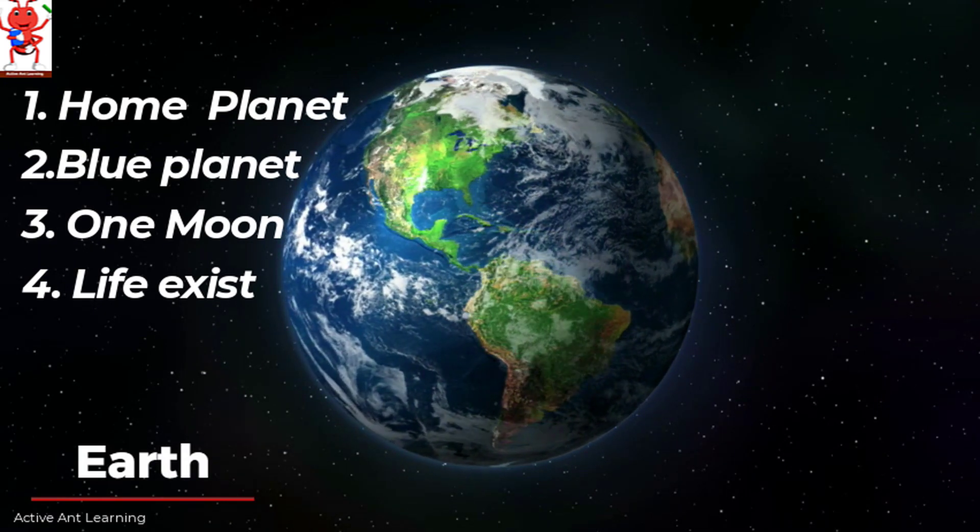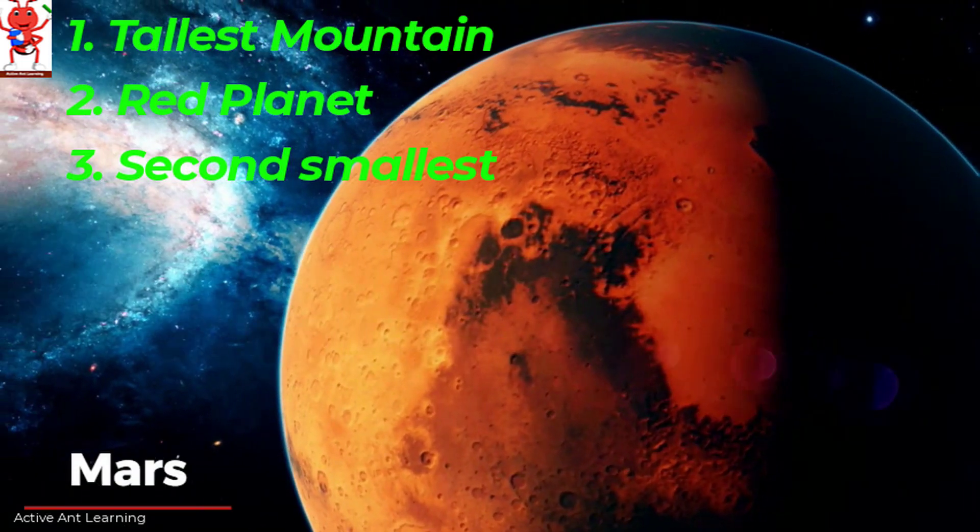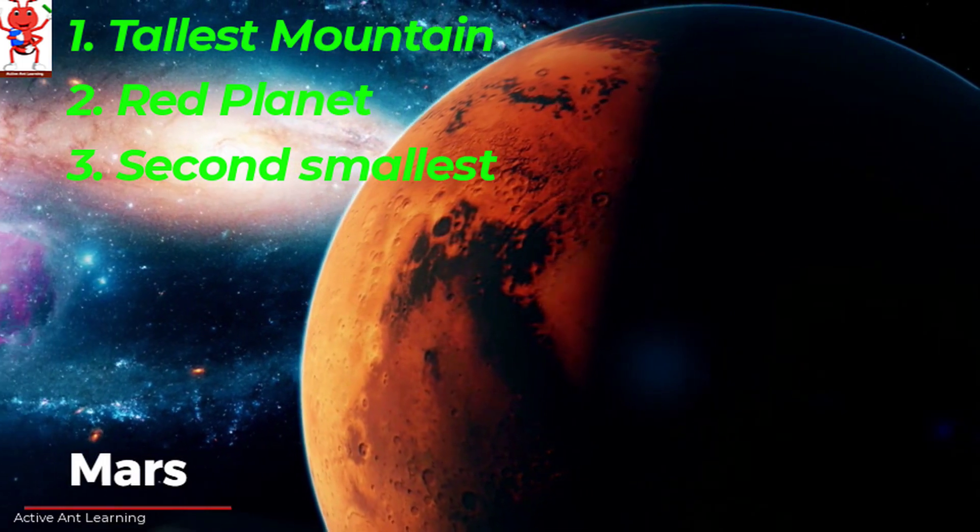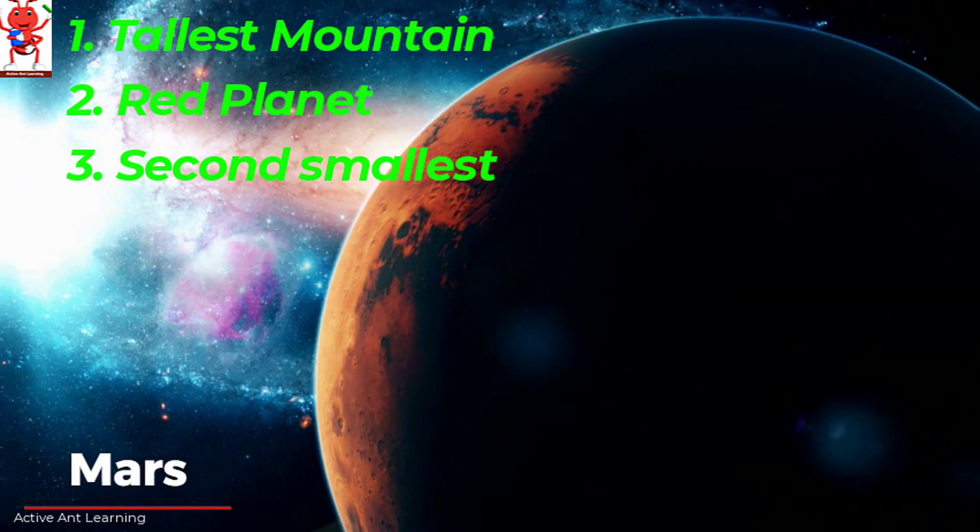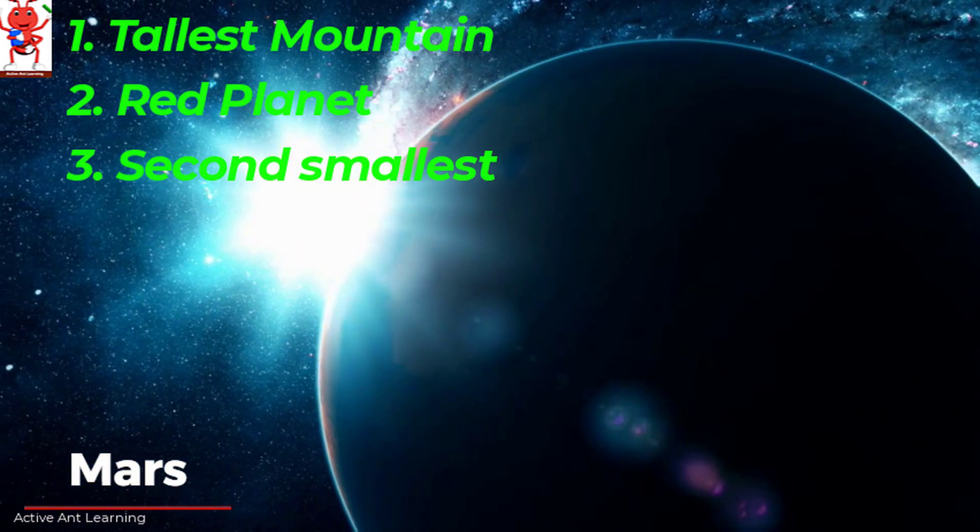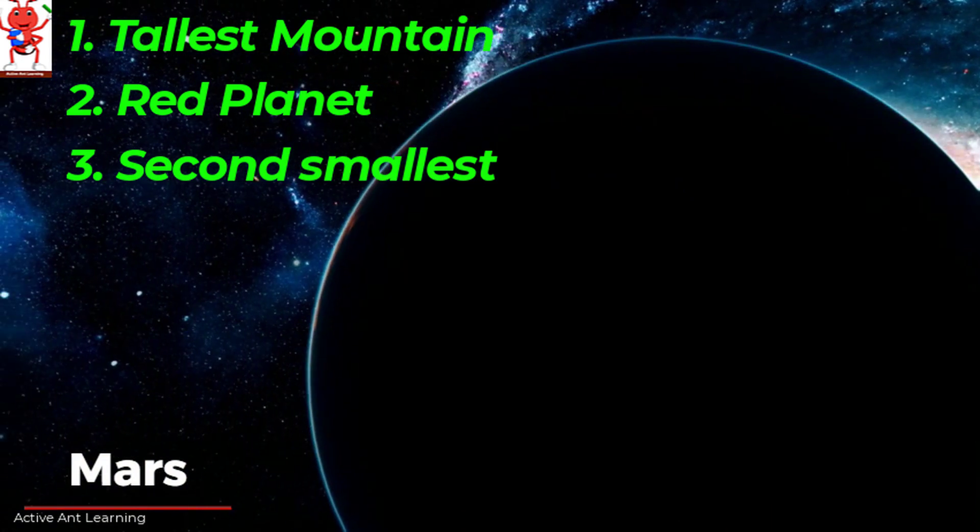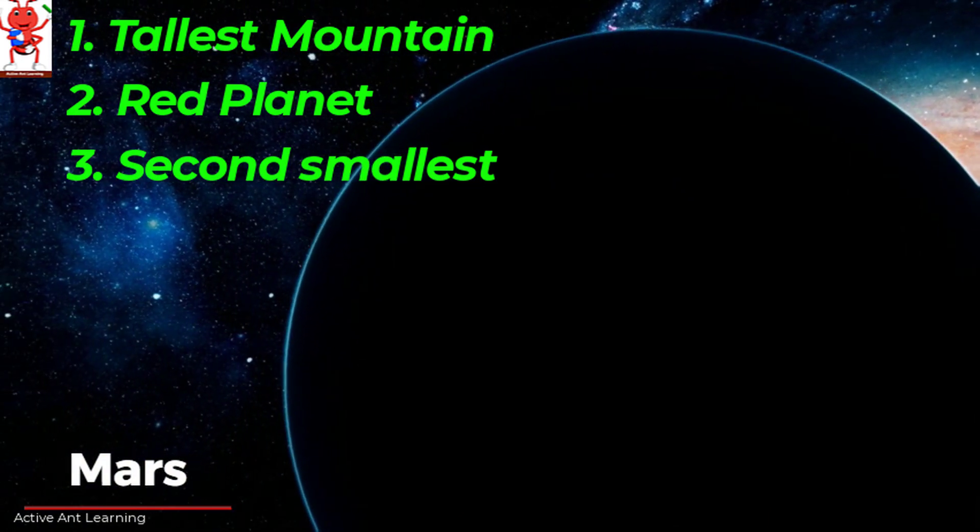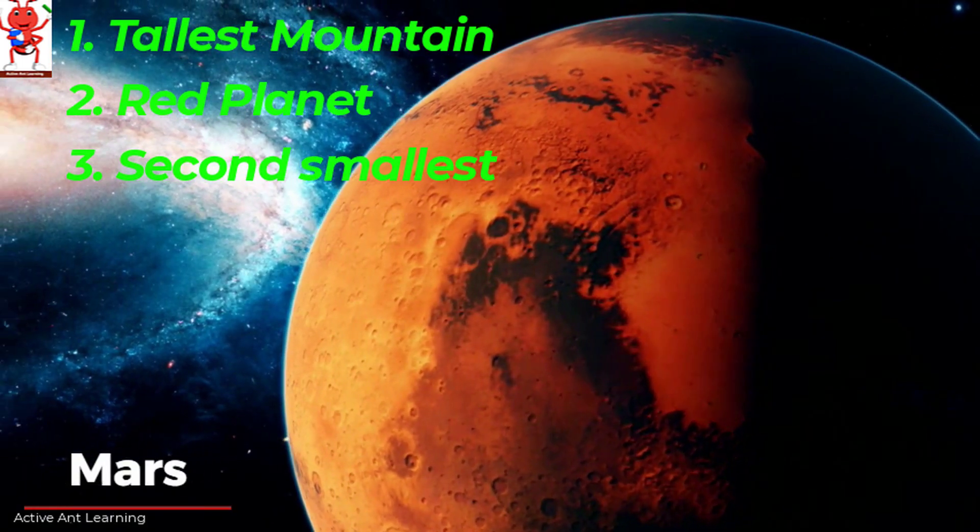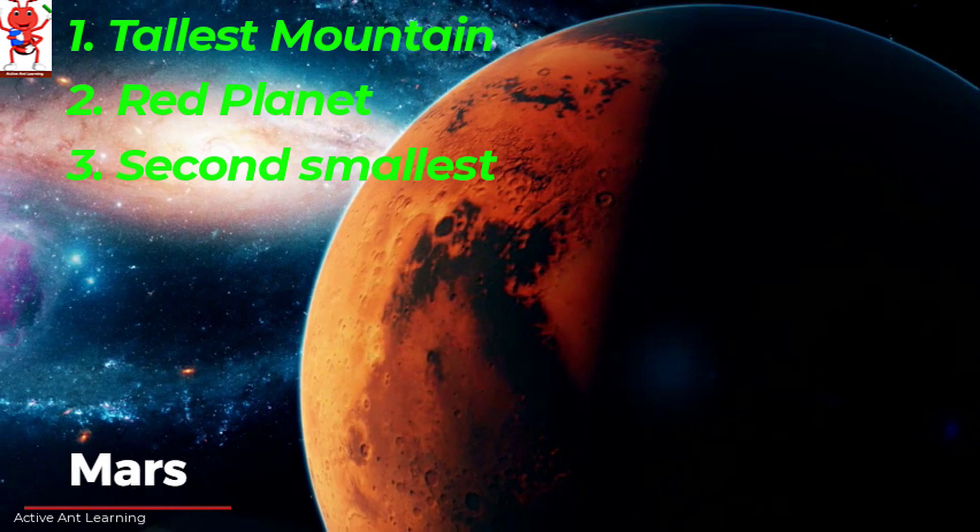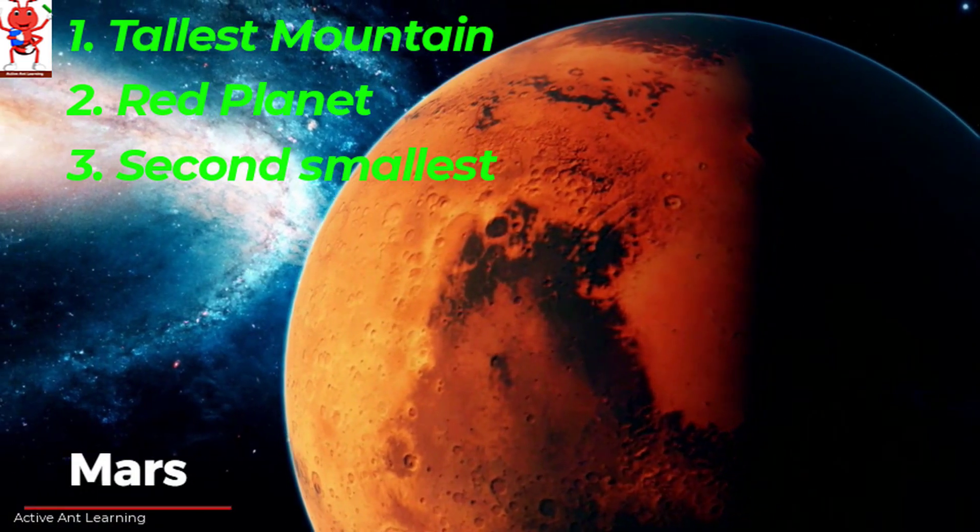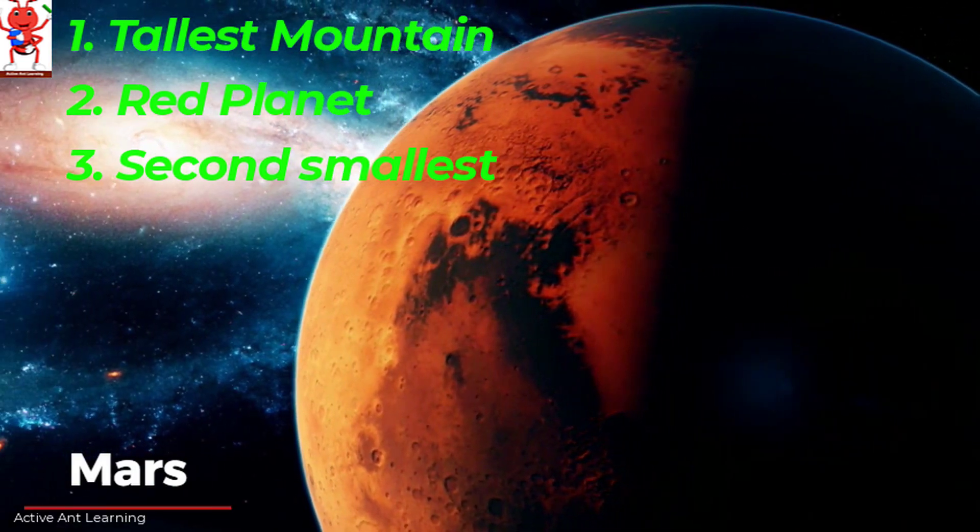The fourth planet from the sun is Mars. It is home to the tallest mountain in the solar system. Anvi what else do you know about Mars? Mars is the second smallest planet and it is covered with red dust. So friends if your favorite color is red then Mars is the place for you. Yes you are right Anvi.